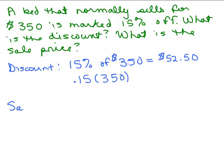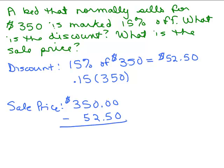So that's the discount. So what's the sale price? The sale price, you would take the original amount, $350, and subtract the discount, because that's how much you don't have to pay. And then you can go ahead and subtract. So it looks like the sale price is going to be $297.50. The discount was $52.50.